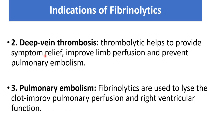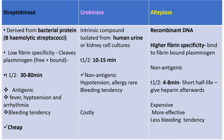In deep vein thrombosis, thrombolytics help to provide symptomatic relief, improve lymph perfusion, and prevent pulmonary embolism. In pulmonary embolism, fibrinolytics are used to lyse the clot and improve pulmonary perfusion and right ventricular function. These fibrinolytics include streptokinase, urokinase, and alteplase.